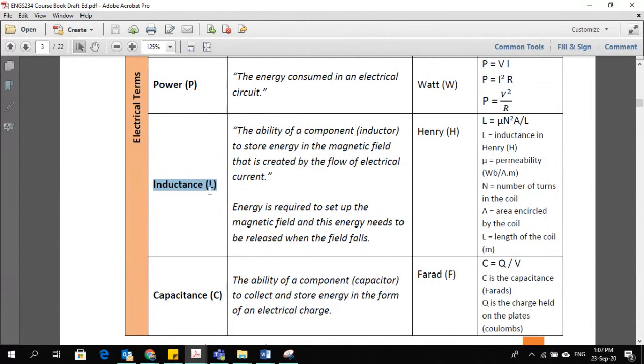Symbolized by the letter L. Inductance is the ability of a component to store energy in the magnetic field that is created by the flow of electrical current. An inductor looks like a spring. If you look at the picture from the internet, you will see it's just like a spring or you can say like a coil, the copper wire. If you turn it around any cylindrical shape item, it will look like a coil or a spring. That is called inductance.